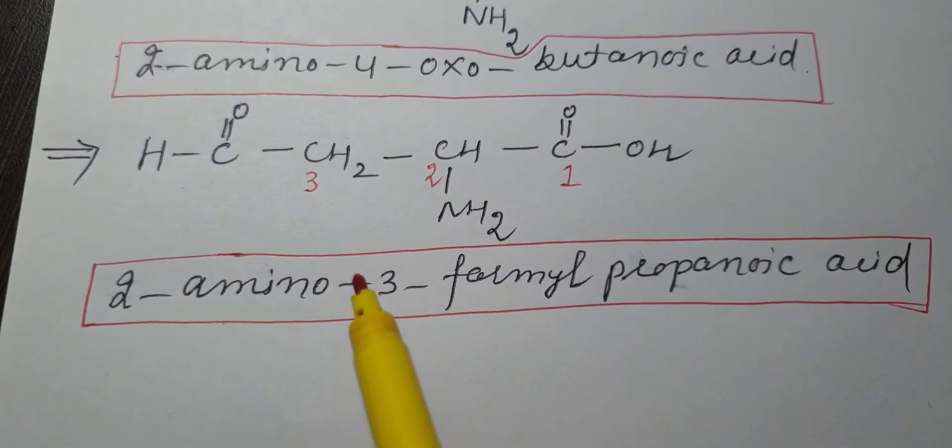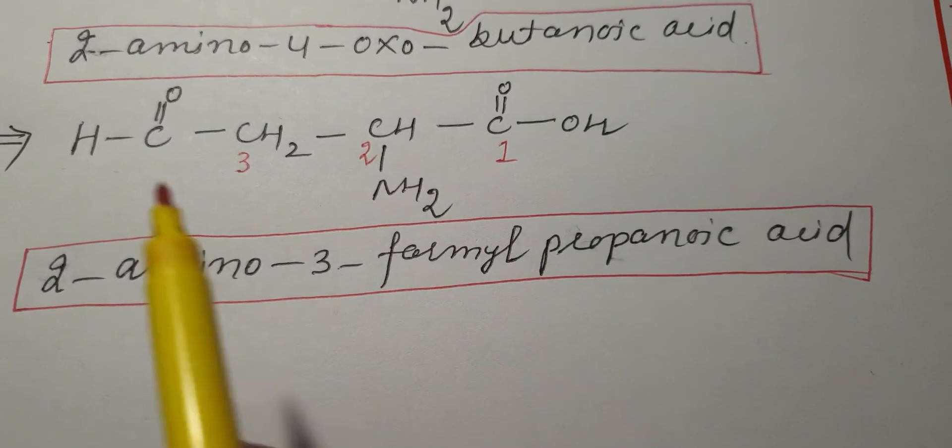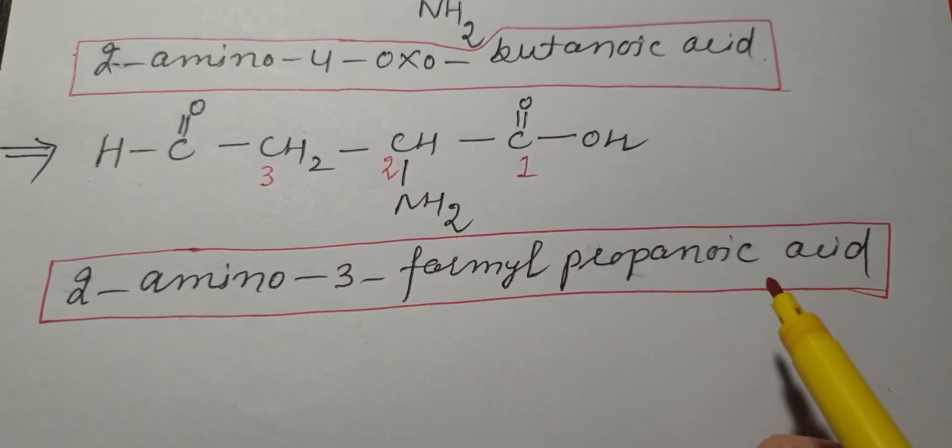So the name of this compound which contains polyfunctional groups is 2-amino-3-formylpropanoic acid.